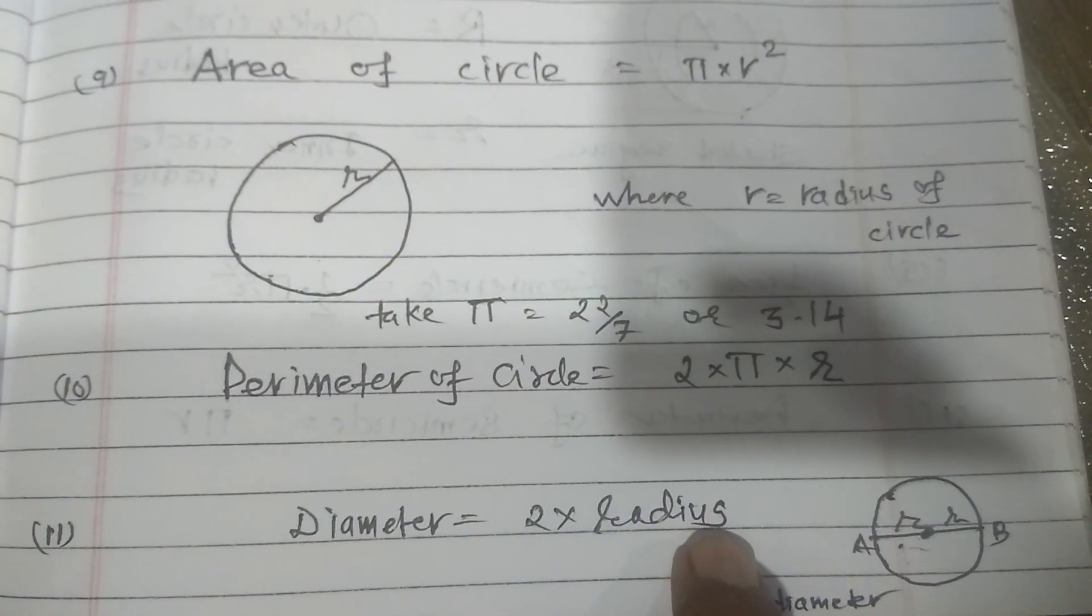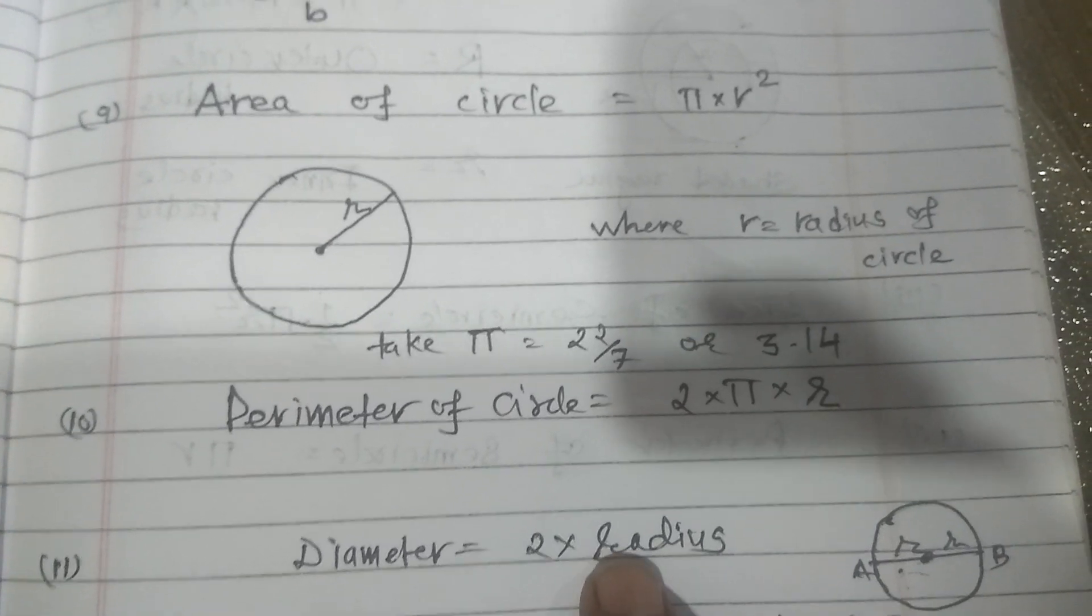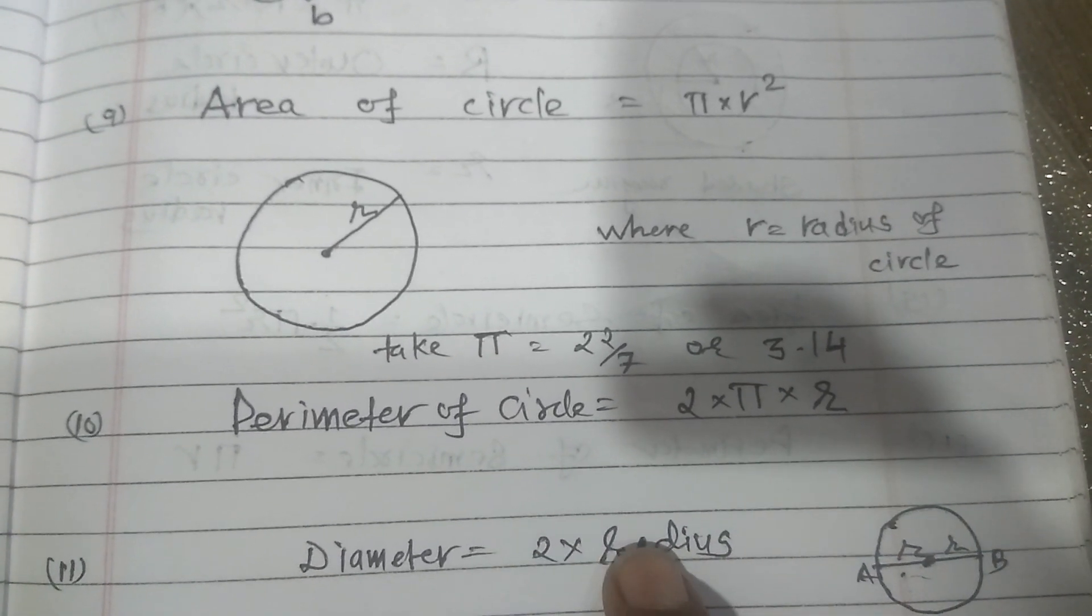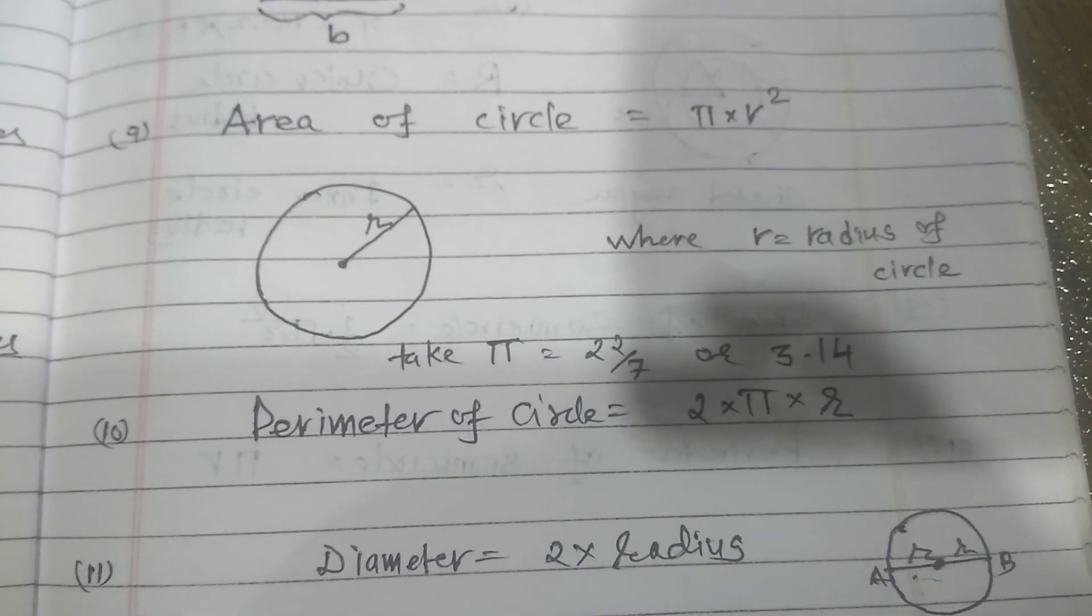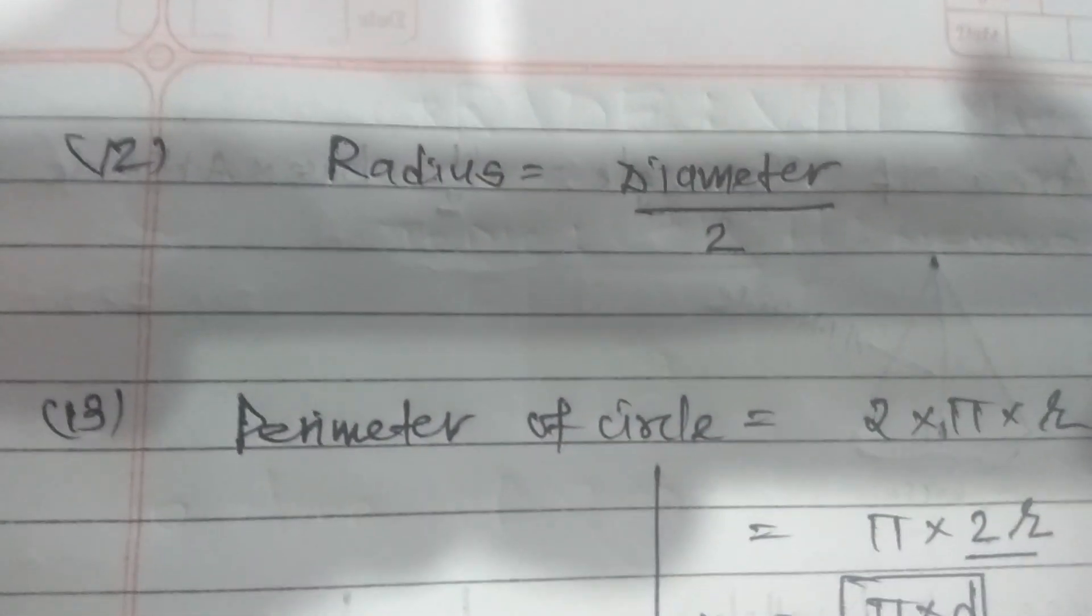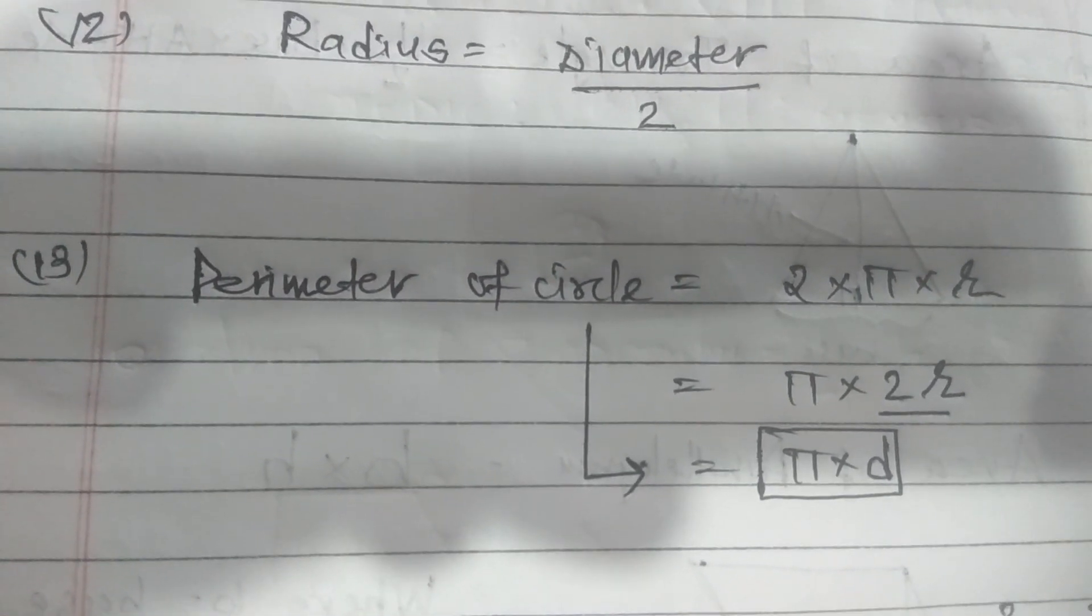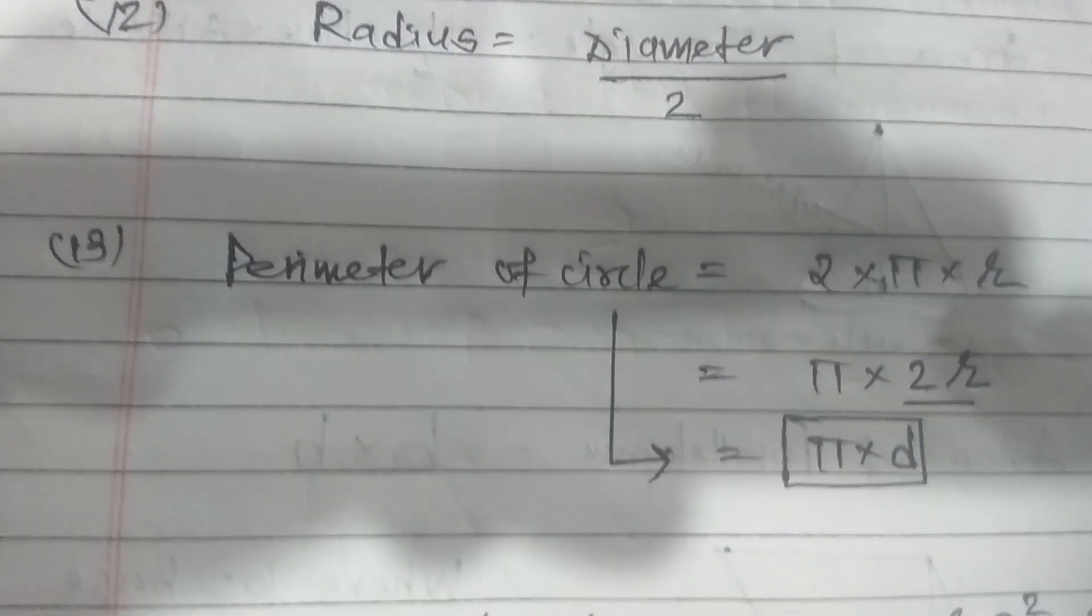Diameter of the circle, that is 2 multiplied by radius, means 2R. You see diameter, it is R plus R means 2R, 2 into radius. So radius is equal to diameter upon 2. Next formula, perimeter of circle also we can define by pi into D.